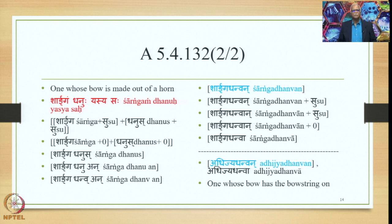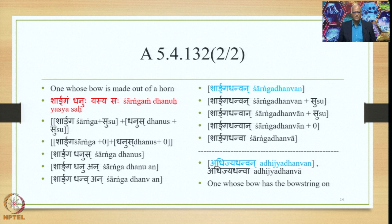Sharaṅga Dhanva is the Prathama Ekavachana of the compound Sharaṅga Dhanvan. Similarly, Adhijya Dhanvan is derived by substituting Sa by An via Dhanushascha, and the Prathama Ekavachana is Adhijya Dhanva — 'one whose bow has the bow string on,' meaning one who is always ready.